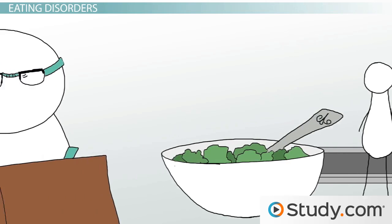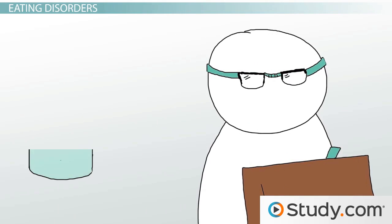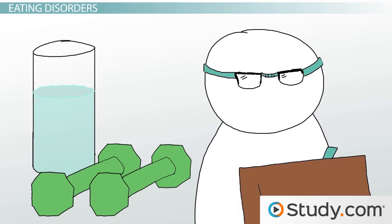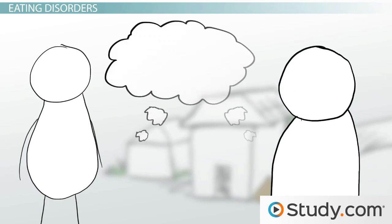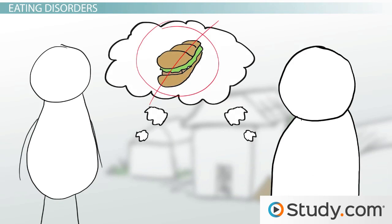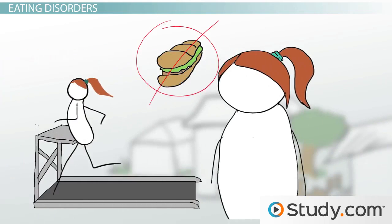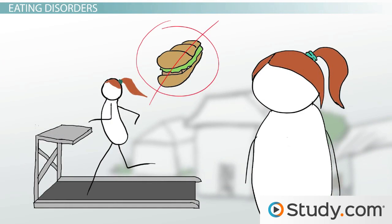It's important to remember that these disorders are not simplistic and that they can take many different forms. For example, most people equate anorexia with not eating. However, anorexia can also be linked to over-exercising.